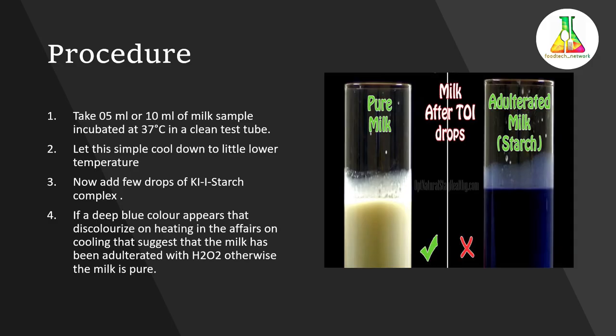First, we need to prepare the sample. Before any test, sampling is a very important step. We put a 5 to 10 ml milk sample in a clean and dry test tube, place it in a water bath, and incubate it at 37 degrees Celsius for a few minutes. After reaching that mild temperature, we cool it down, because the reaction used to detect H₂O₂ requires a cooler temperature.